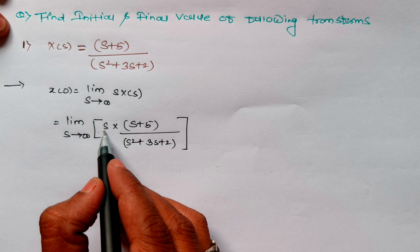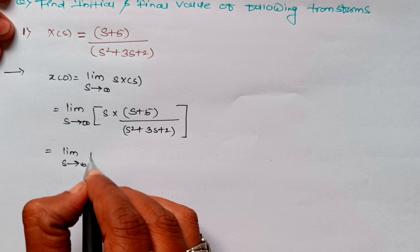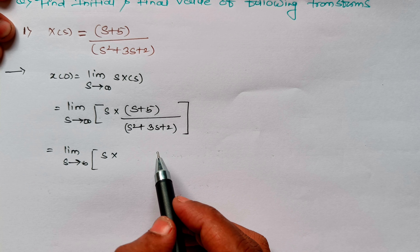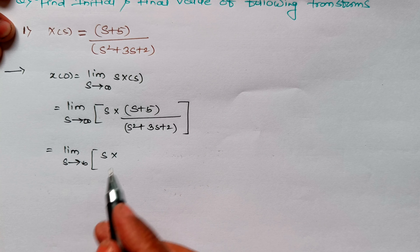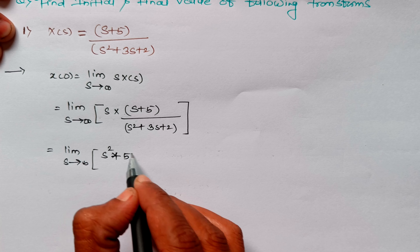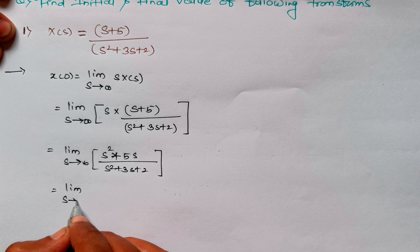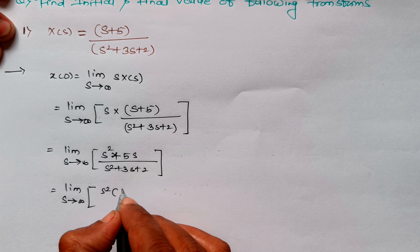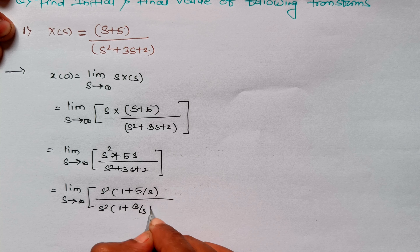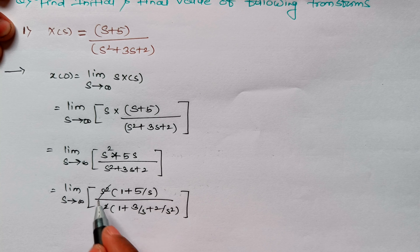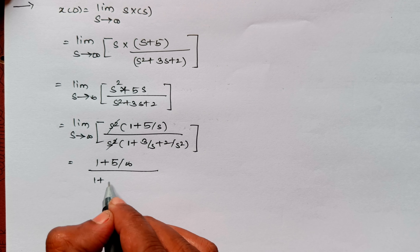Now if we apply the limit here, we get infinity into infinity which is not valid. What we can do is take s as common from the numerator as well as the denominator. Taking s common gives us s upon (s²+3s+2). Now let's take s² as common from numerator and denominator: numerator becomes (1 + 5/s) and denominator becomes (1 + 3/s + 2/s²).